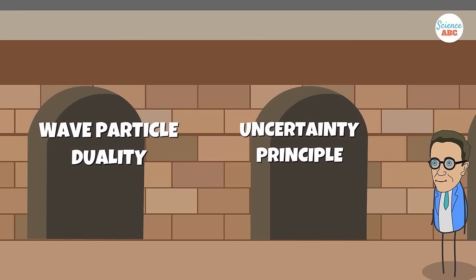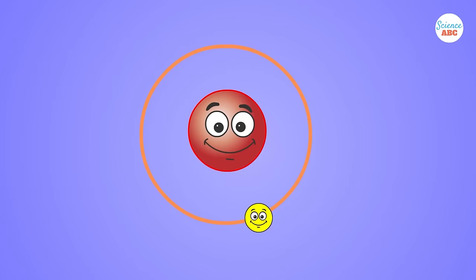Combining the concept of wave-particle duality and the uncertainty principle, Erwin Schrödinger came up with the quantum mechanical model of an atom. In this model, the electrons did not revolve around the nucleus in circular orbits.